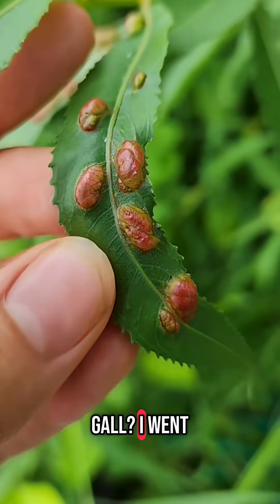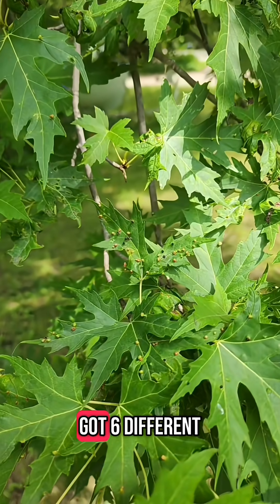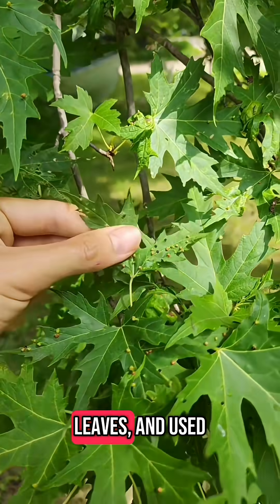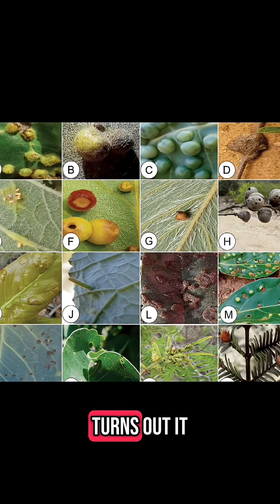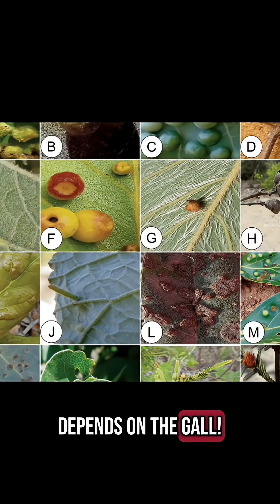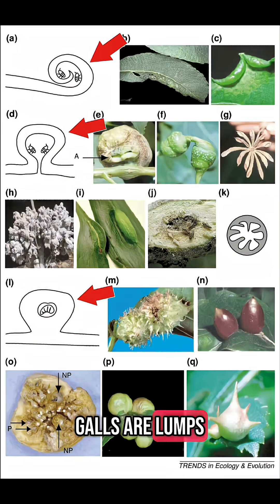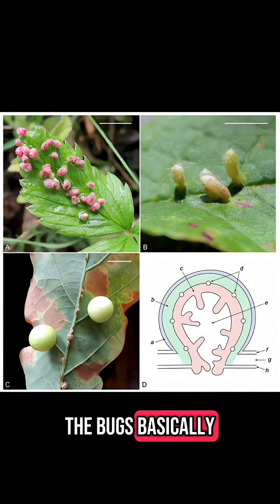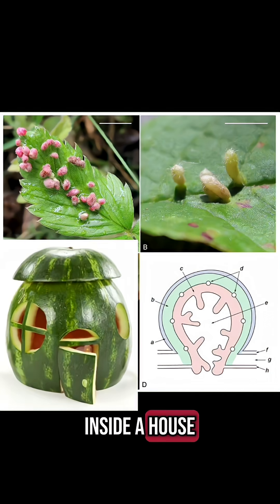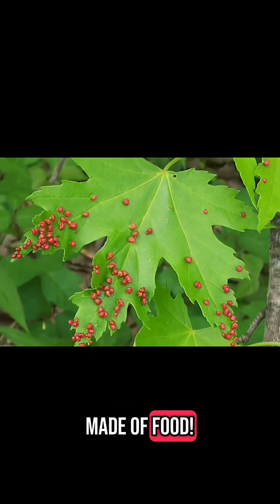What's inside a gall? I went in my yard, got six different leaves, and used a microscope to find out. Turns out, it depends on the gall. Galls are lumps on plants formed by different kinds of bugs. The bugs basically get to live inside a house made of food.